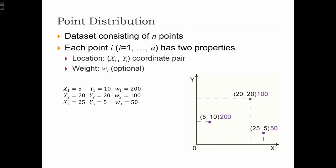The second property that a point may have is an optional weight. Here, the weight is some sort of measured value that we have at the location (x, y).